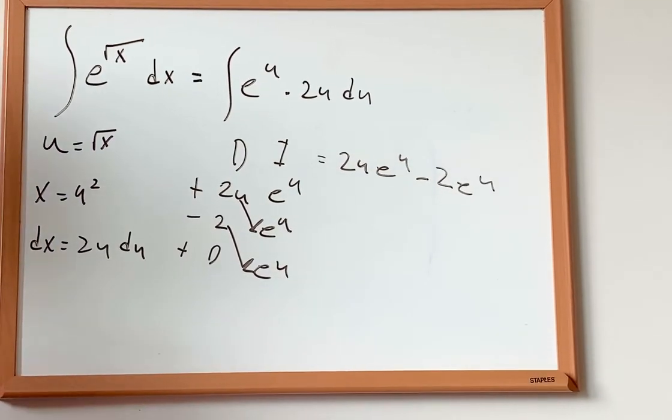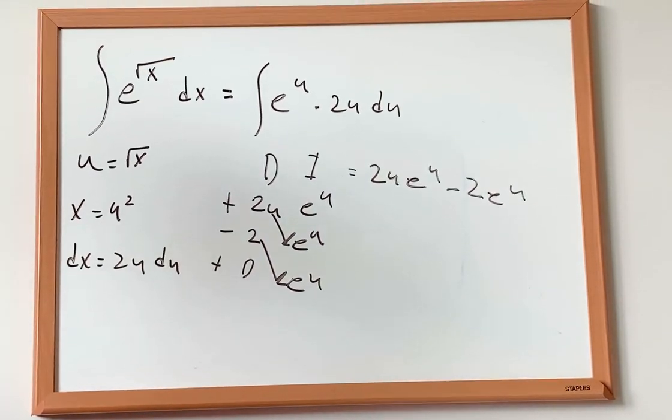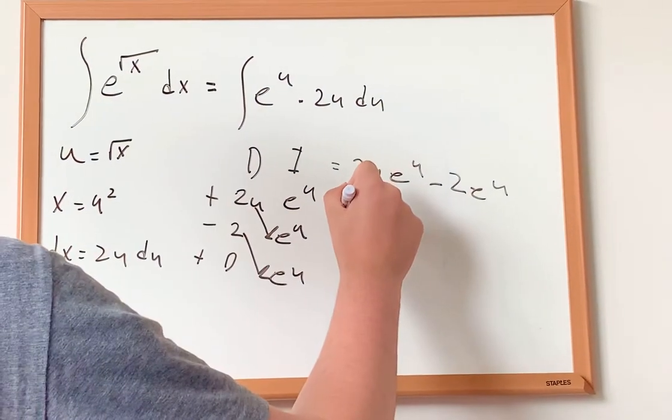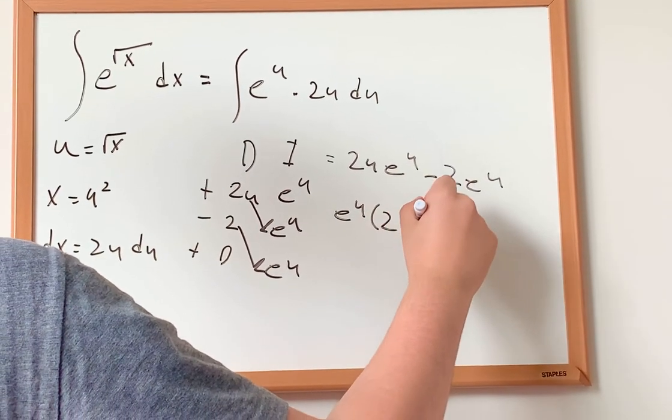And now we can see that e to the power of u is a common factor. So we can factor it. So we get e to the power of u multiplied by 2u and then minus 2.